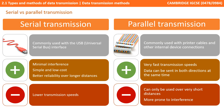Let's compare these two side by side. Serial transmission is now commonly used with USB, the Universal Serial Bus interface. There is minimal interference as data is travelling down a single cable. The connections are simple and cheap to produce, and there is better reliability over longer distances compared to parallel.